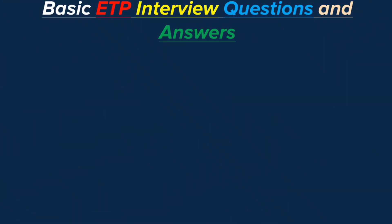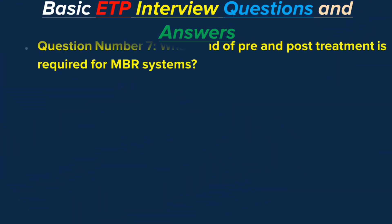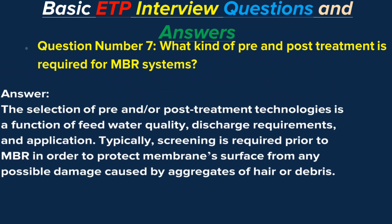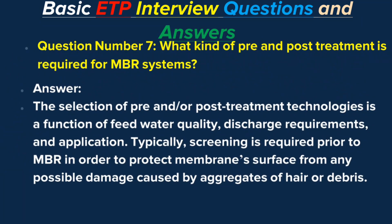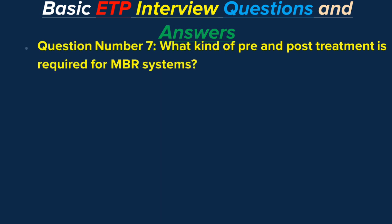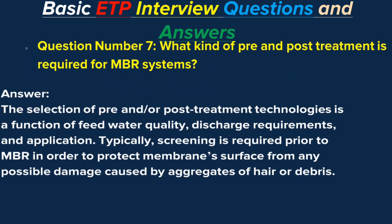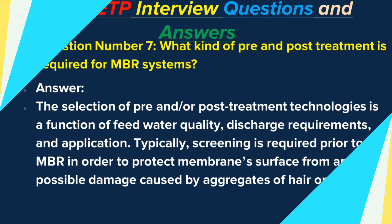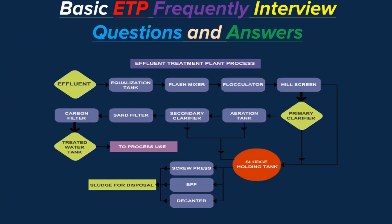Question number 7: What kind of pre- and post-treatment is required for MBR systems? Answer. The selection of pre- and/or post-treatment technologies is a function of feed water quality, discharge requirements, and application. Typically, screening is required prior to MBR in order to protect the membrane surface from any possible damage caused by aggregates of hair or debris.